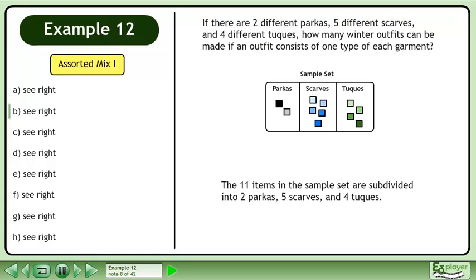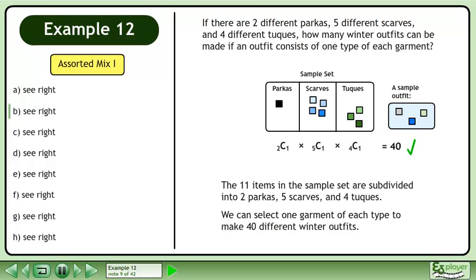The 11 items in the sample set are subdivided into two parkas, five scarves, and four toques. We can select one garment of each type to make 40 different winter outfits.